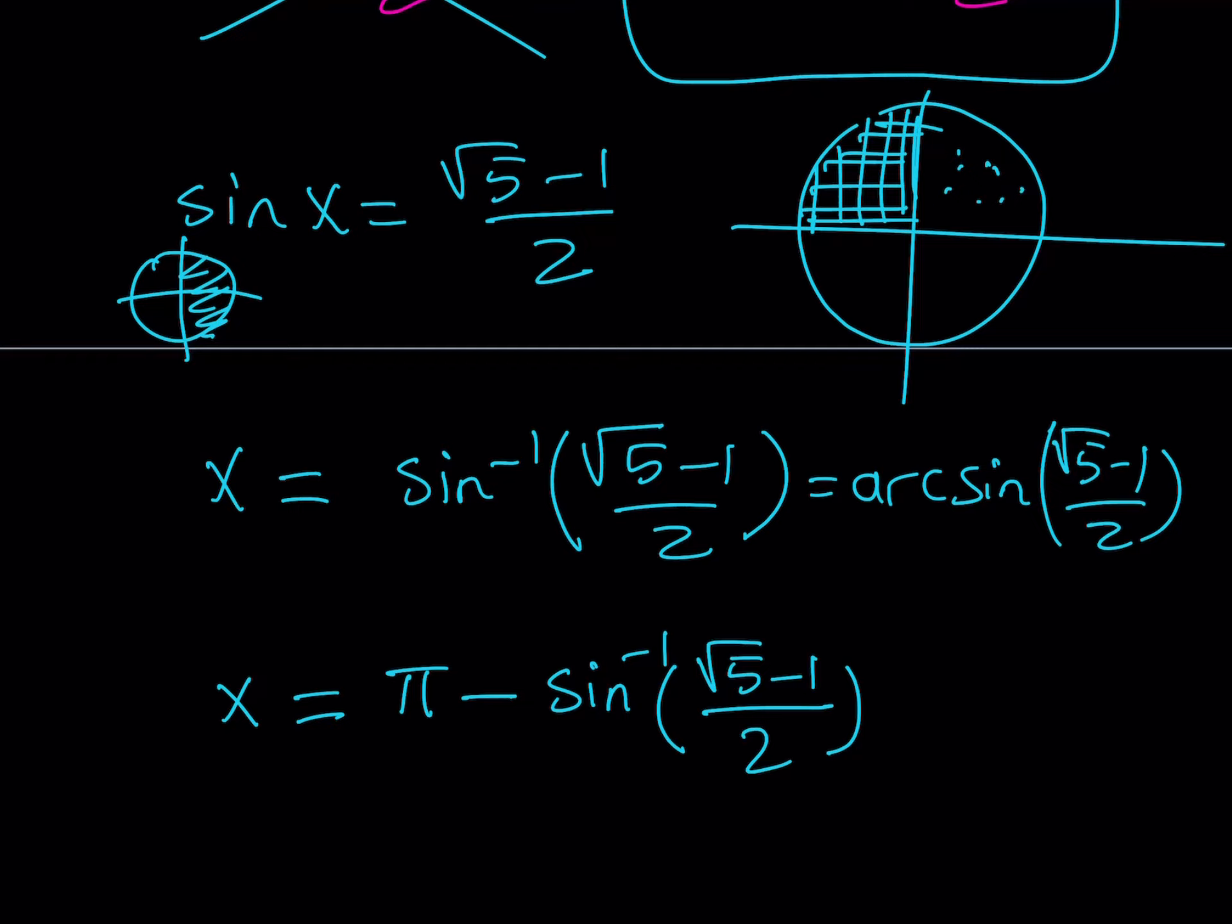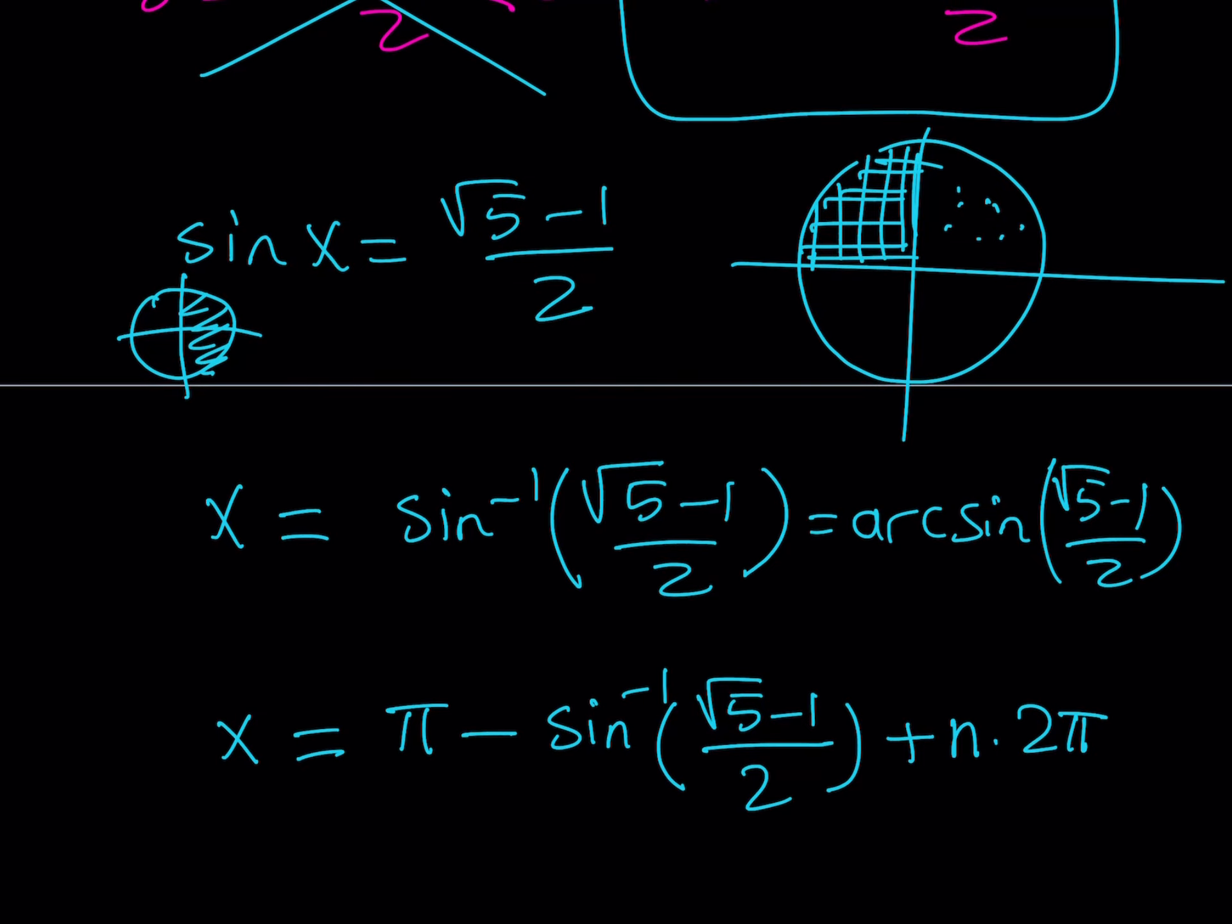Because our cosine value has to be negative in order for this equation to be true. This gives us a particular solution and to get the general solutions we just need to add multiples of 2π to this. They could be negative or positive and this should give us all the solutions.